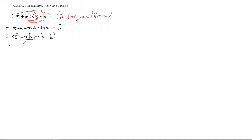So we have a² minus ab plus ab minus b². Now let's check the like terms. The minus ab and plus ab cancel to zero, so we're left with a² minus b². Is this always the case or is it just a coincidence?